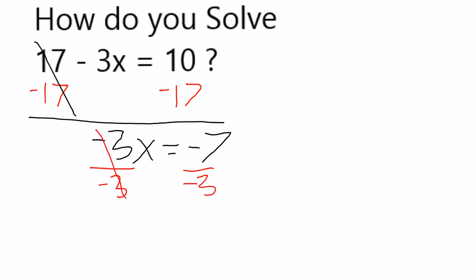Negative 3 over negative 3 cancels, leaves you with just x. And negative 7 over negative 3, because they're both negative, is going to give me a positive 7 over 3. If I make that into a mixed number, 3 goes into 7 two full times and one third.